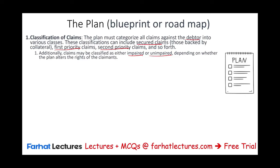Confirmation of the plan generally results in the discharge of the debtor from all debt that existed before the plan — some of the debt might go away. This discharge is similar to Chapter 7 bankruptcy, unless the debt is non-dischargeable. This gives the debtor a clean slate, freeing them from previous debt and allowing them to start fresh post-bankruptcy under reorganization. Additionally, the automatic stay — the injunction stopping creditors from collecting debt — is terminated upon plan confirmation because we're starting fresh.